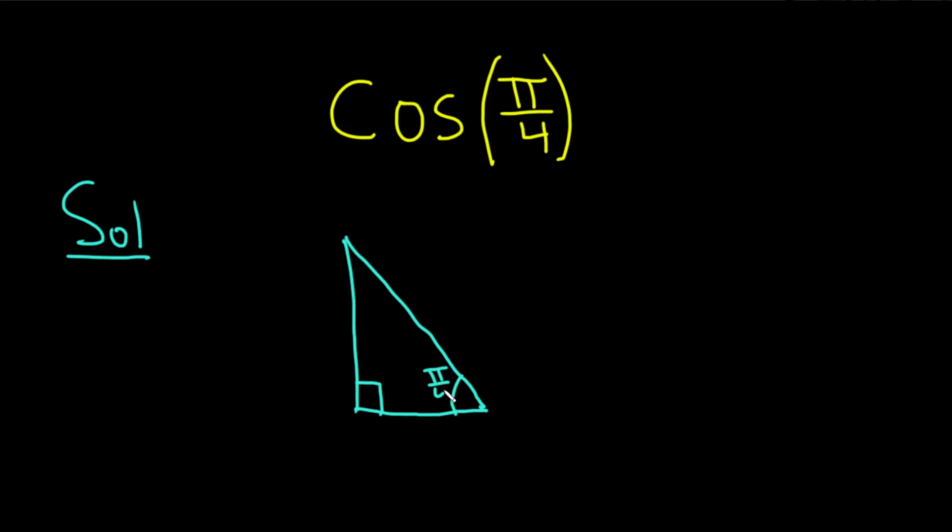This angle is pi over 4. This angle is also pi over 4. The side is length 1, 1, and this one is the square root of 2.